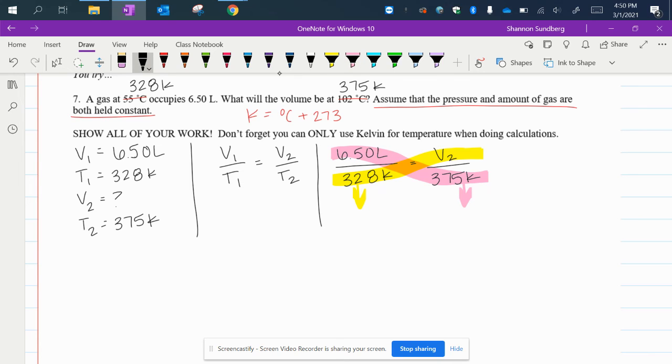328 Kelvin times V2 is V2 times 328 Kelvin. Then 6.50 liters times 375 Kelvin gives me 2,437.5, and I'll bring my units: liters times Kelvin.